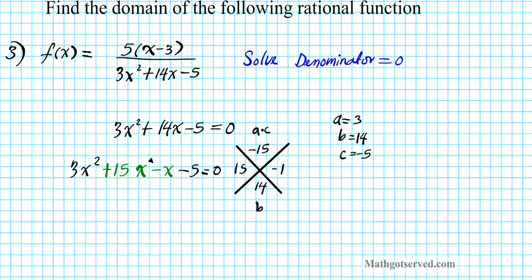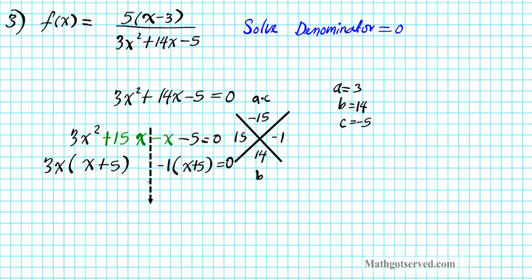We split down the middle and factor by grouping. From the first two terms I can extract 3x, which leaves x plus 5. From the last two terms I can extract negative 1, which also leaves x plus 5. These two quantities in parentheses must be the same for our factorization to be correct — and they are — so we factor out x plus 5, leaving 3x minus 1.